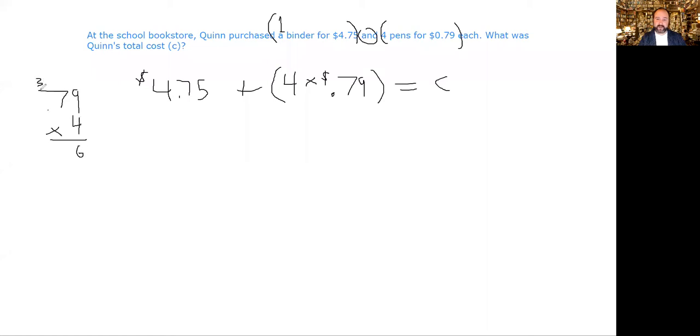4 times 7 is 28, trying 30, 31, that's supposed to be 31, so it is 316. So 316 plus 475.